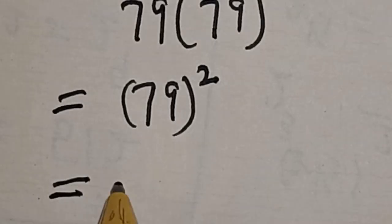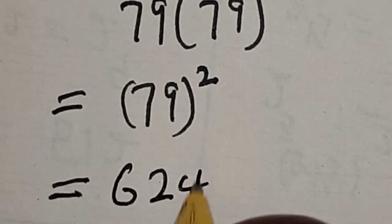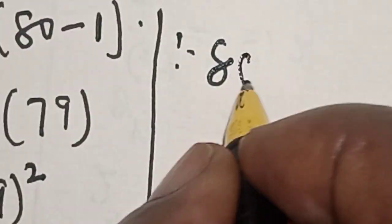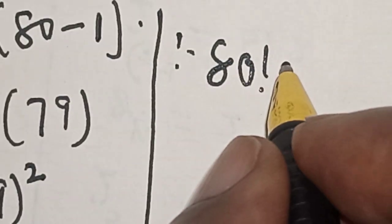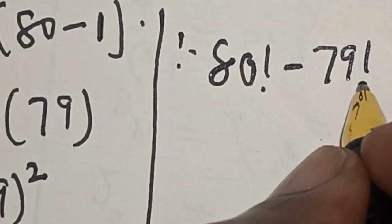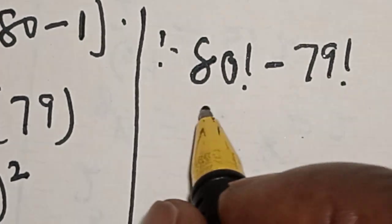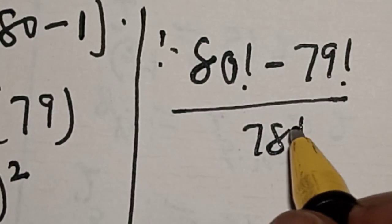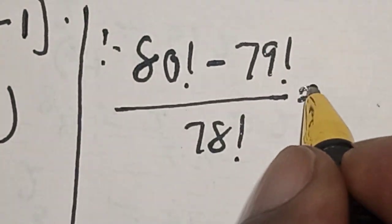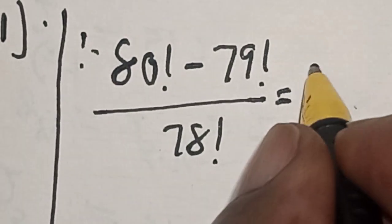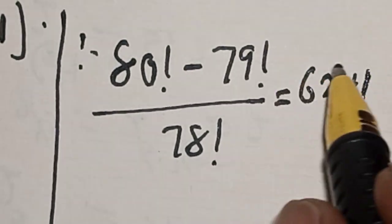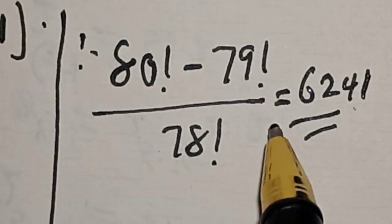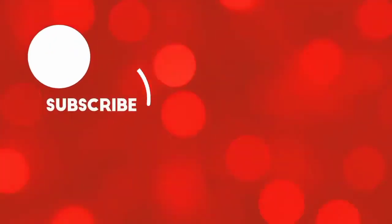79 squared is equal to 6241. So 80 factorial minus 79 factorial divided by 78 factorial is equal to 6241. That is our final answer. If you enjoyed the class, please don't forget to like, share, comment and subscribe. Thank you.